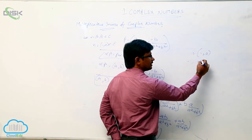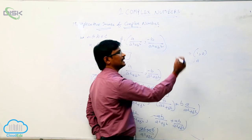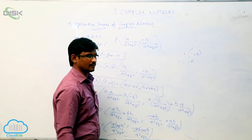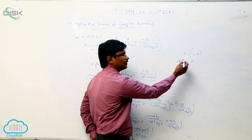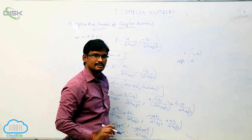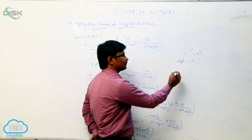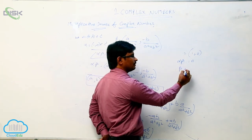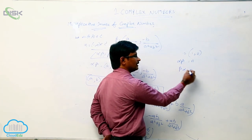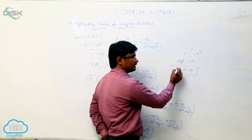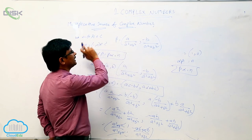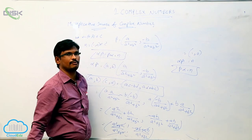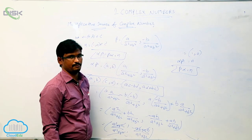The result is (1, 0), which is nothing but the multiplicative identity. So alpha × beta = (1, 0). Similarly, we can prove that beta × alpha = (1, 0). Therefore, beta is called the multiplicative inverse of alpha.